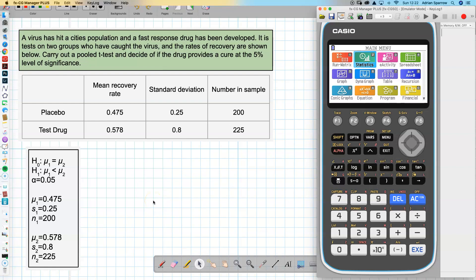Here we have a typical two-sample t-test. We've got two different samples and we're trying to test whether the test drug is better than the placebo.